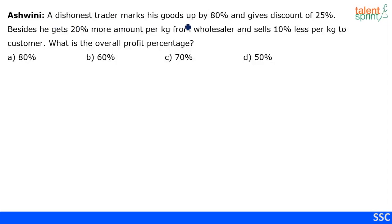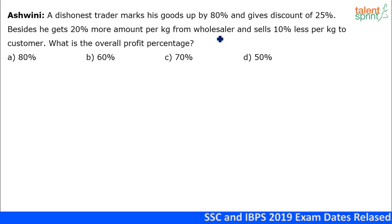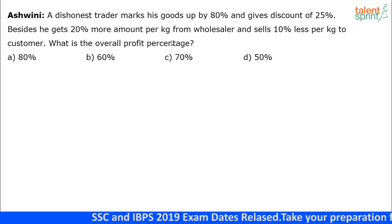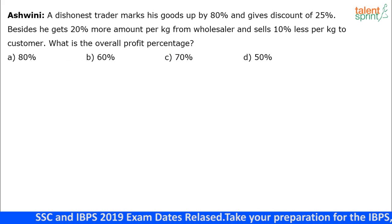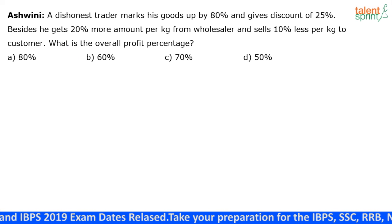A dishonest trader marks his goods up by 80 percent and gives a discount of 25 percent. Besides, he gets 20 percent more amount per kg from the wholesaler and sells 10 percent less per kg to the customer. What is the overall profit percentage?